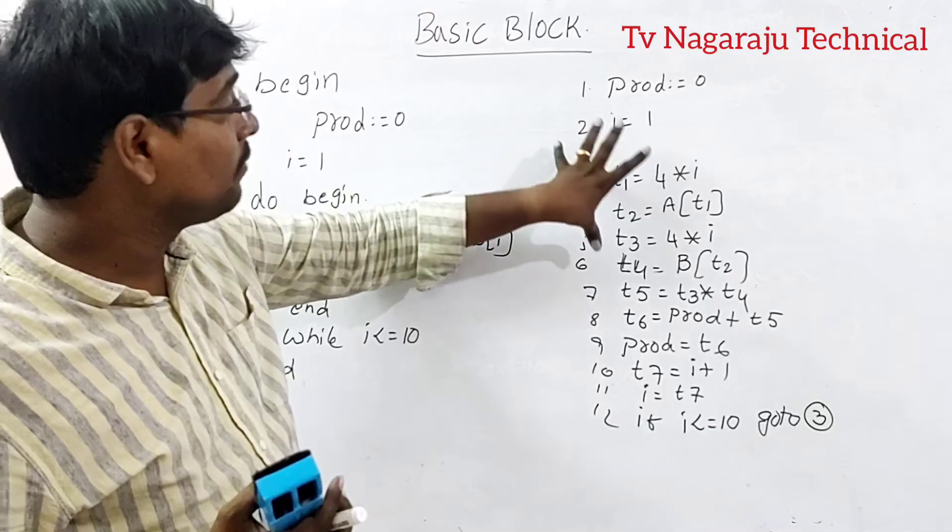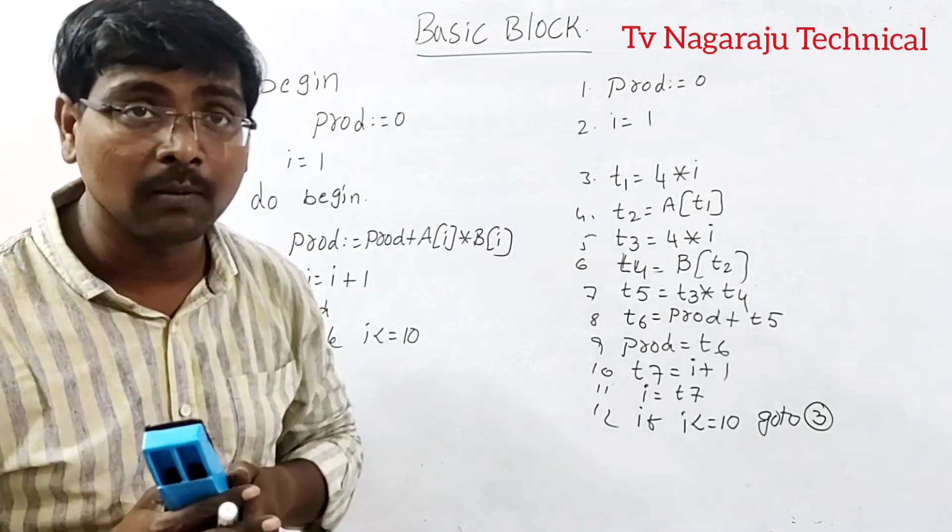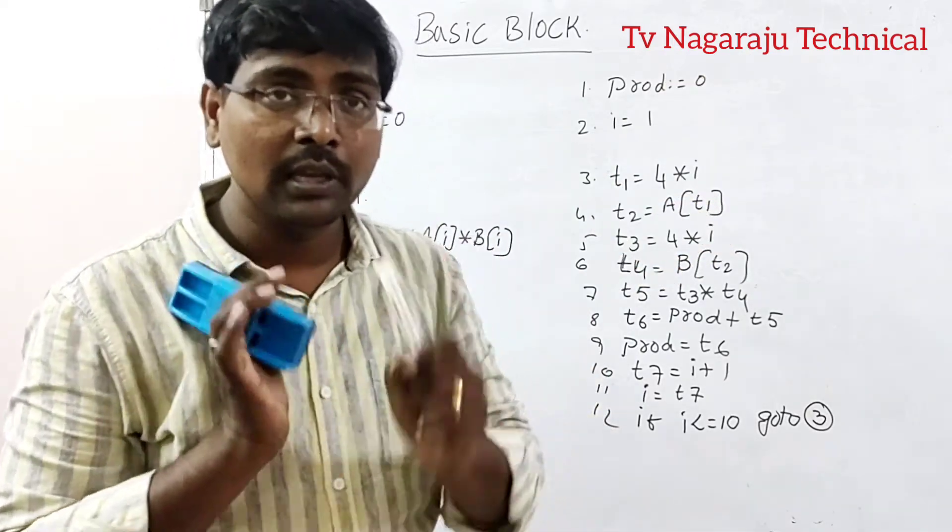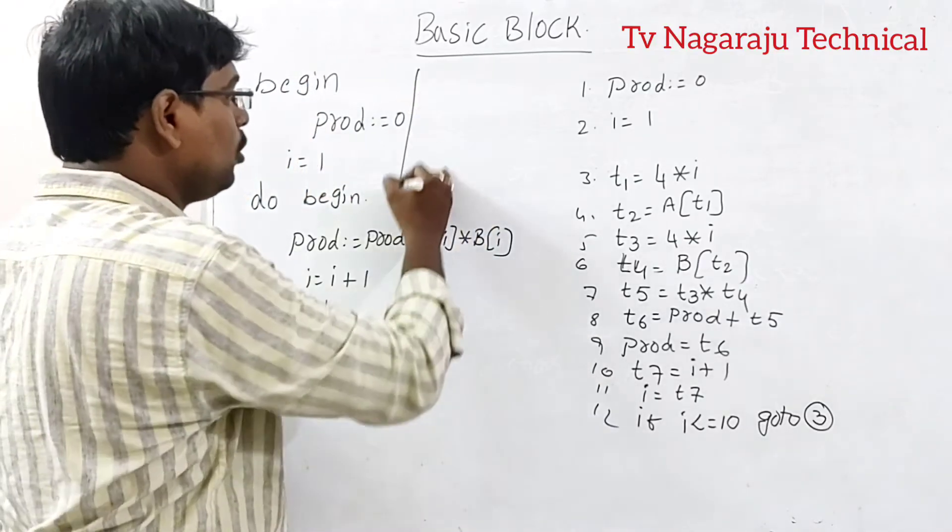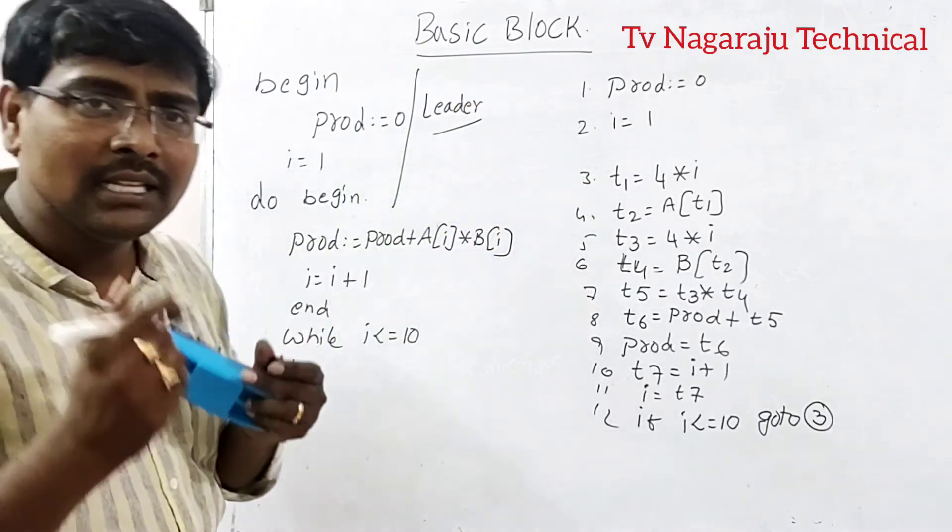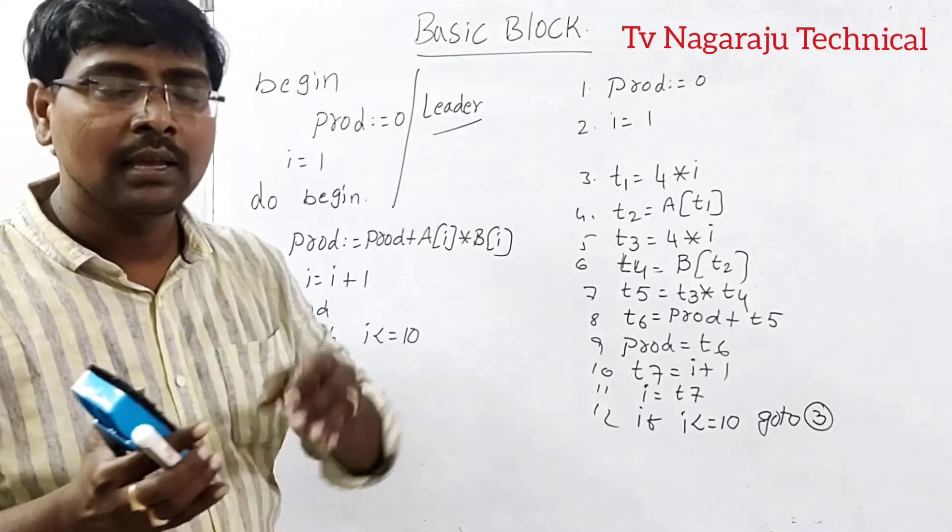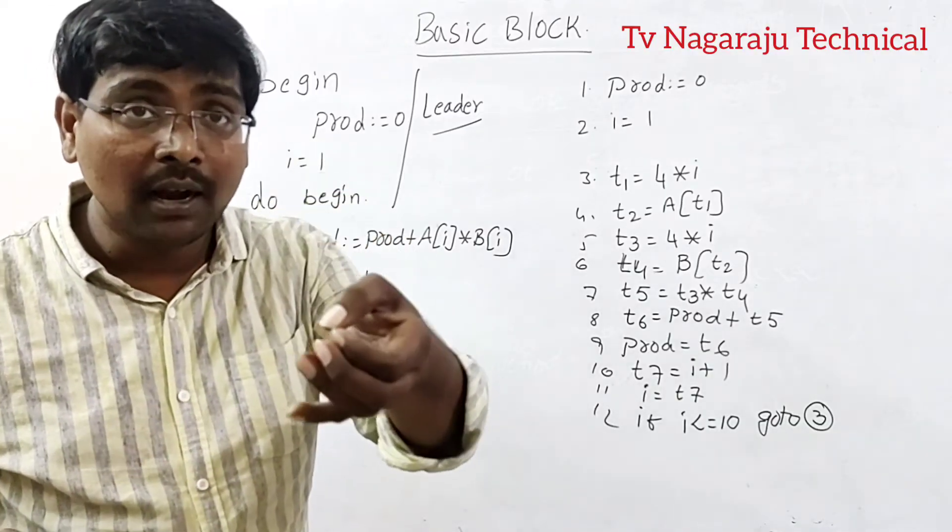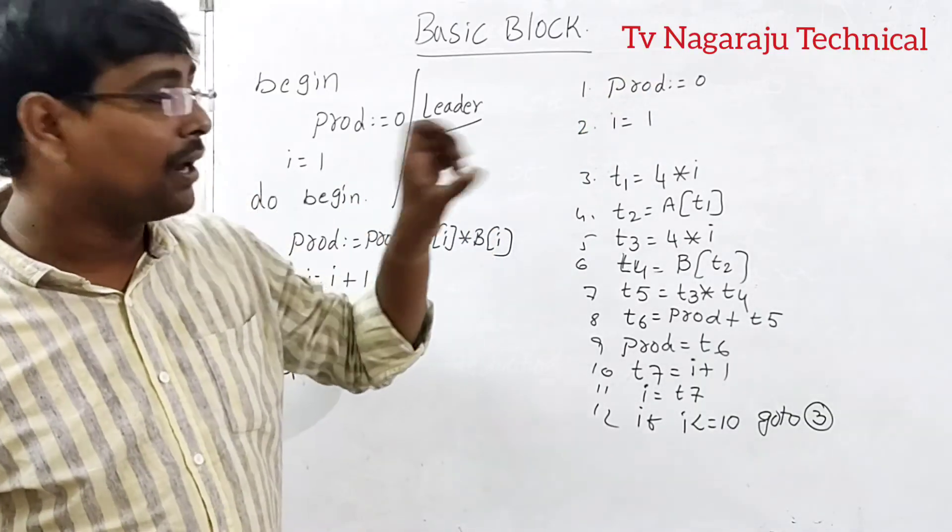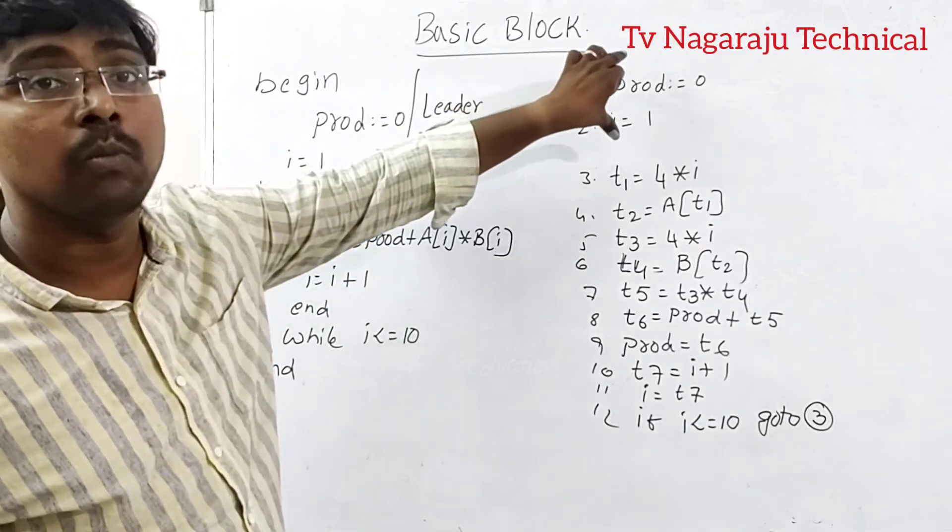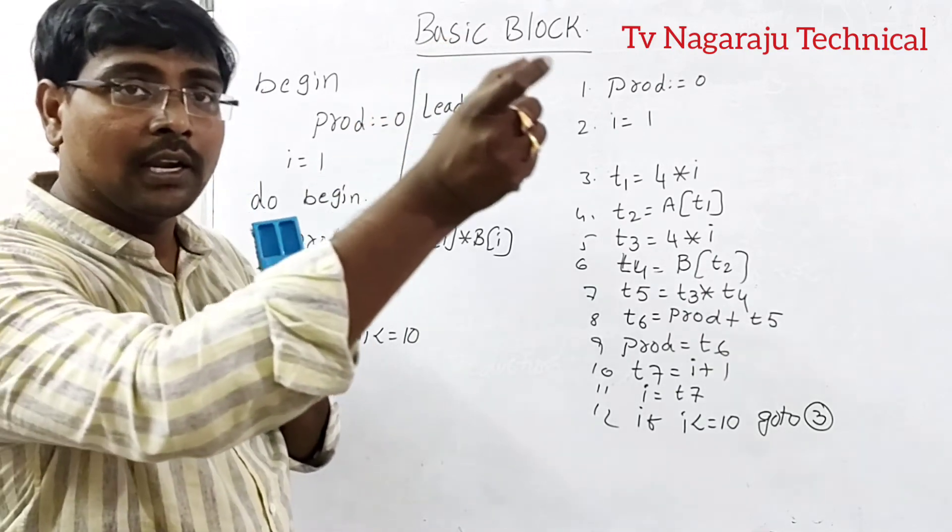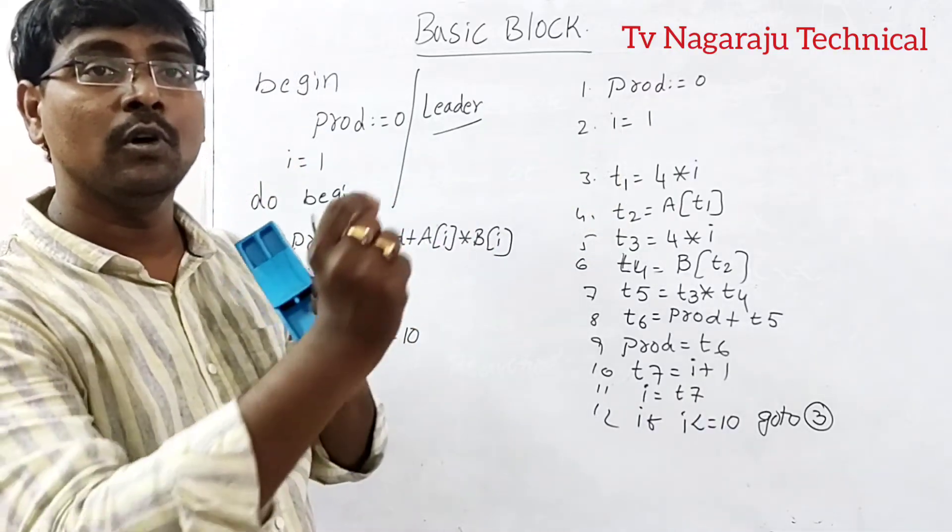Now, how to convert the 3 address code into basic blocks? Divide the 3 address code into multiple blocks. Here at the time of multiplication, you need to identify the leader in the program. What is meant by leader? How to identify? The beginning statement is called a leader. Now every leader forms a block. Every leader forms a block. The block consists of starting from one leader to before another leader.